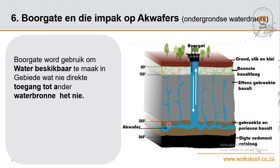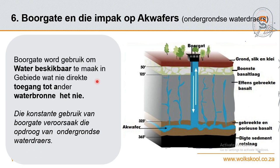Wanneer jy te veel water gebruik - meer as wat aangevul kan word - dan raak die boorgat droog en dan is dit nie meer beskikbaar vir ander mense of vir menslike gebruik nie. Hoekom mense boorgat doen is om water beskikbaar te maak in gebiede wat nie toegang tot ander bronne het nie, maar jy moet dit so gebruik dat dit volhoubaar is. Jy kan nie aanhoudend die boorgat se water oppomp nie - dit moet gereguleer word, anders verlaag die watertafel en die akwafere se water word uitgeput.